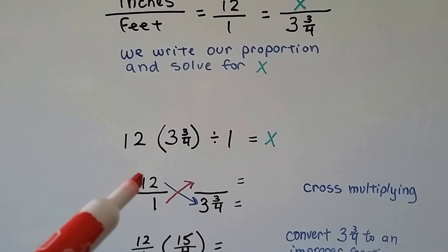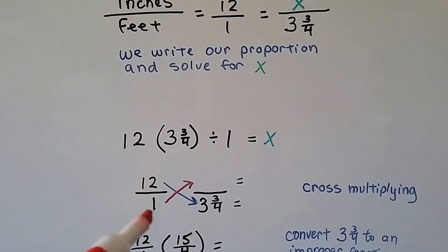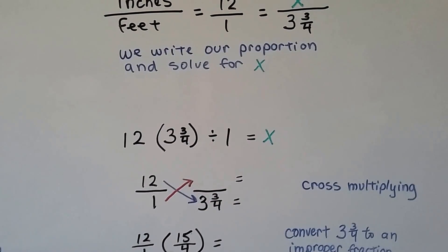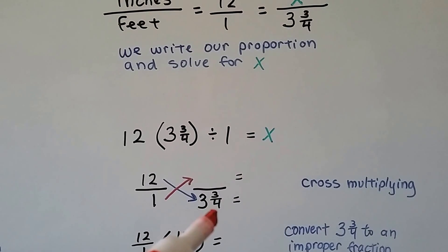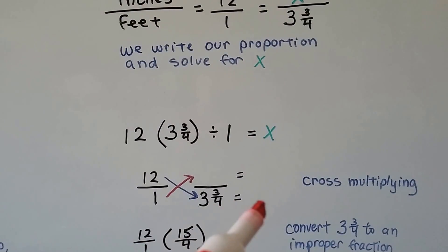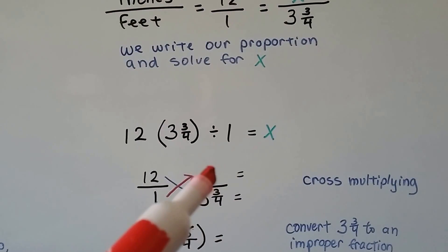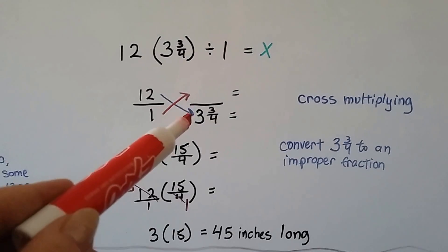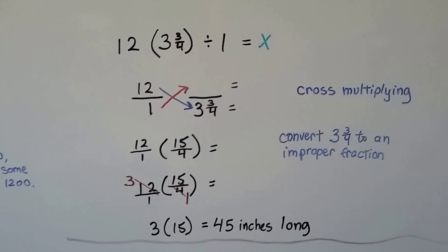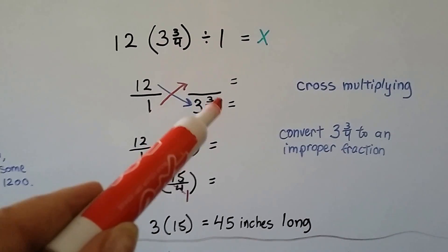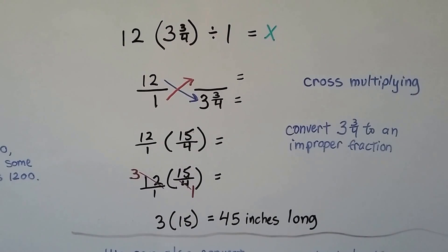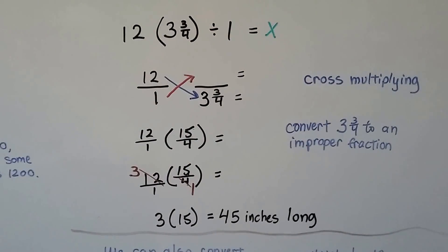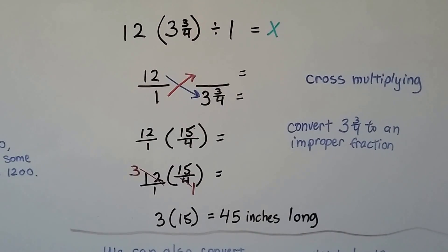We can cross multiply. We can put this 12 over 1 so it's a fraction just like this x over 3 and 3 fourths. 12 times 3 and 3 fourths is going to equal what 1 times x equals. We change this 3 and 3 fourths into an improper fraction. 3 times 4 is 12 plus that 3 numerator is 15 fourths.